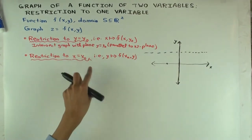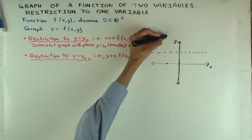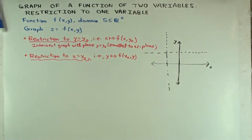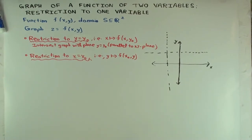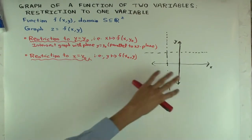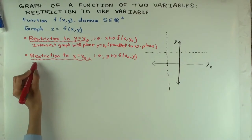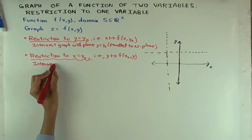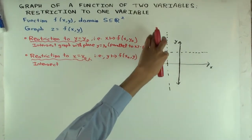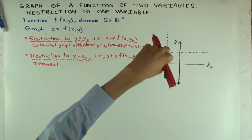What does the line x equals x0 look like in this plane? It will be a vertical line. What would the graph of the restriction look like? You'd intersect the graph of the original function with the plane x equals x0. Viewed in R3, x equals x0 is a plane. What will that be parallel to? It will be parallel to the yz-plane. The y-axis direction in that plane serves as the input variable and the z-axis direction serves as the output variable.